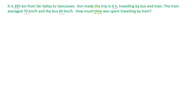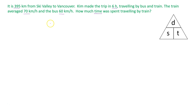We're looking for the time spent traveling by train. Before we attempt to solve this problem, let's first take a look at the relationship between speed, distance, and time. Looking at this pyramid, in order to determine the speed, what we need to do is take the distance and divide it by the time.